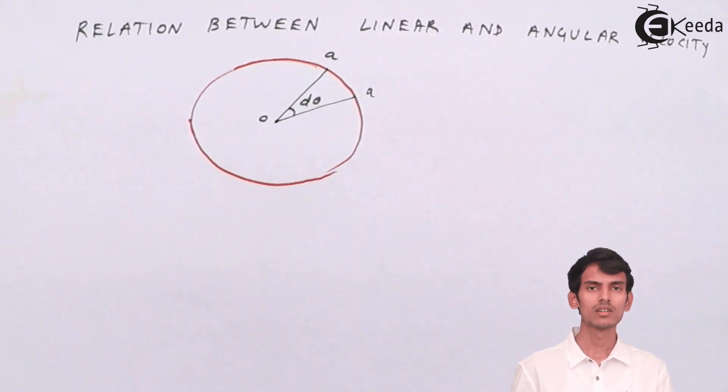The angle that it will cover is d theta or you can write theta as well. Since the angle covered is very small we can write d theta. Or if you want you can write theta, there is no problem in that as well. So let's see the small sector. Let's just remove the small sector out of the circle and look at it.